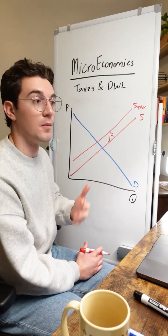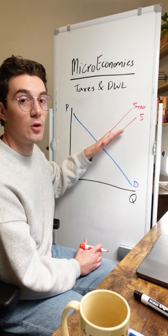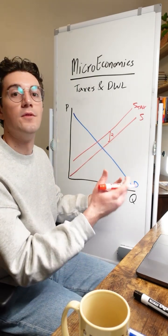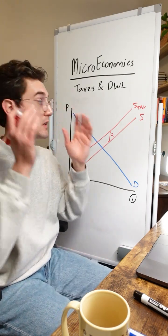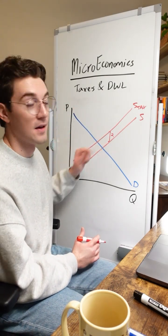Since this tax is restricting market output and producers are being charged a tax once they report their revenues to the government, we're shifting the supply curve to the left by the amount of the tax. But it's easier to conceptualize as shifting it up by the amount of the tax.